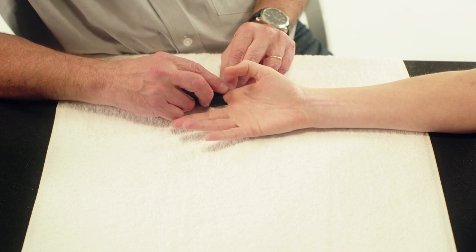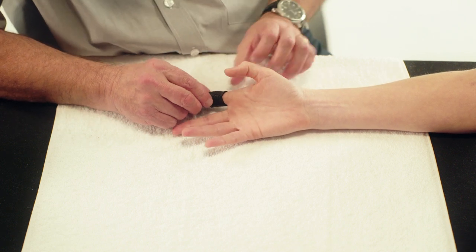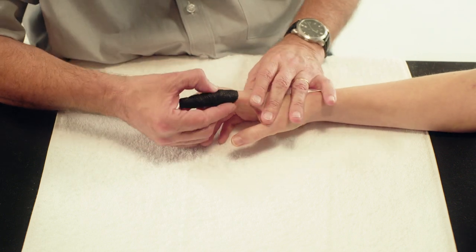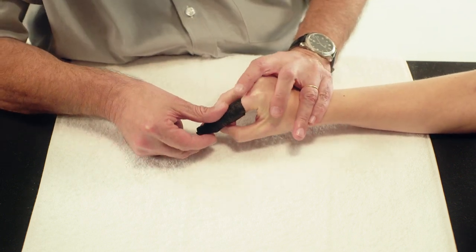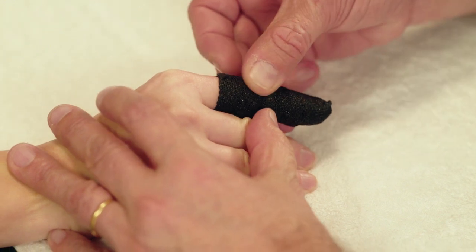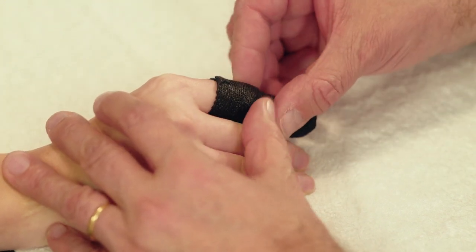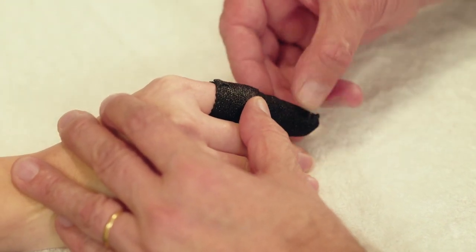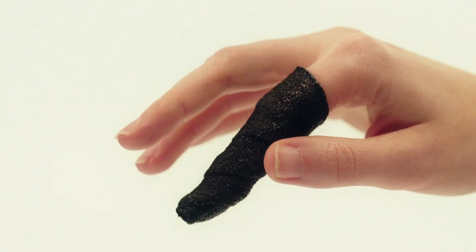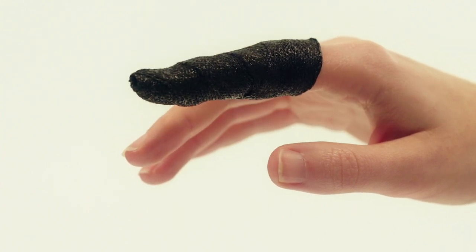The finger can then be placed in the intrinsic position by flexing the MCP joint to 70 degrees and keeping the PIP and DIP joints in full extension.